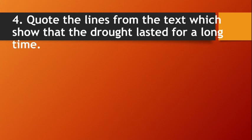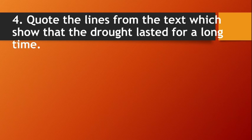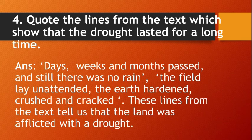Question number four: Quote the lines from the text which show that the drought lasted for a long time. The lines which tell us this are: 'Days, weeks and months passed and still there was no rain. The fields lay unattended. The earth hardened, crusted and cracked.' These are the lines which show that the drought lasted for a long time.